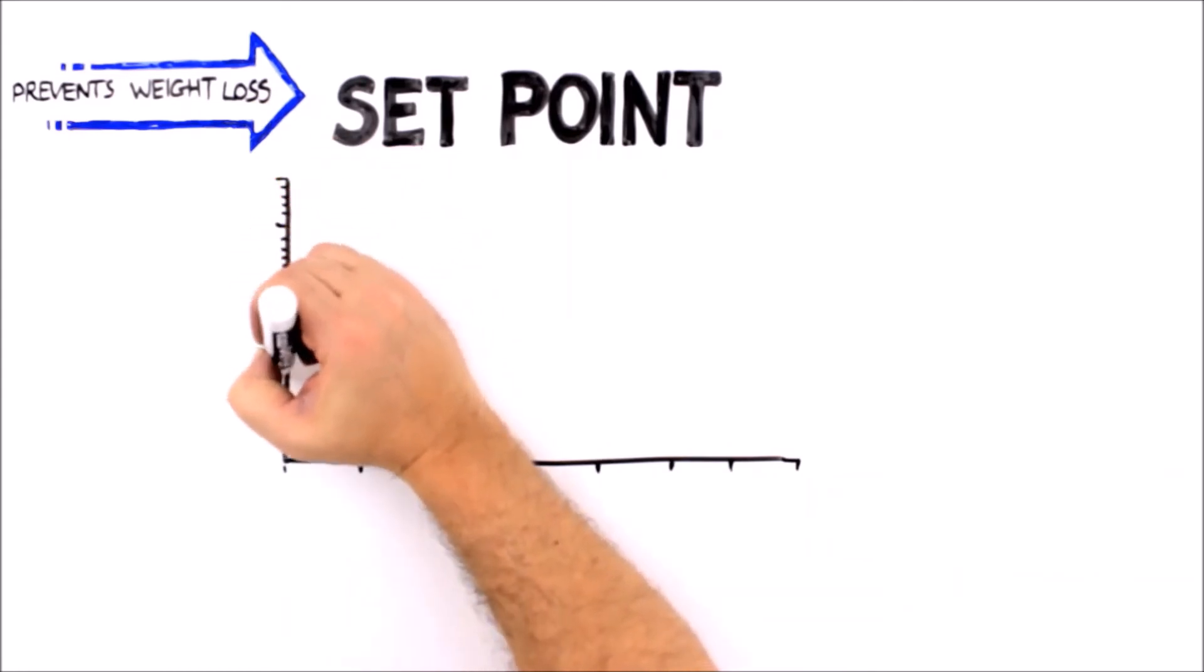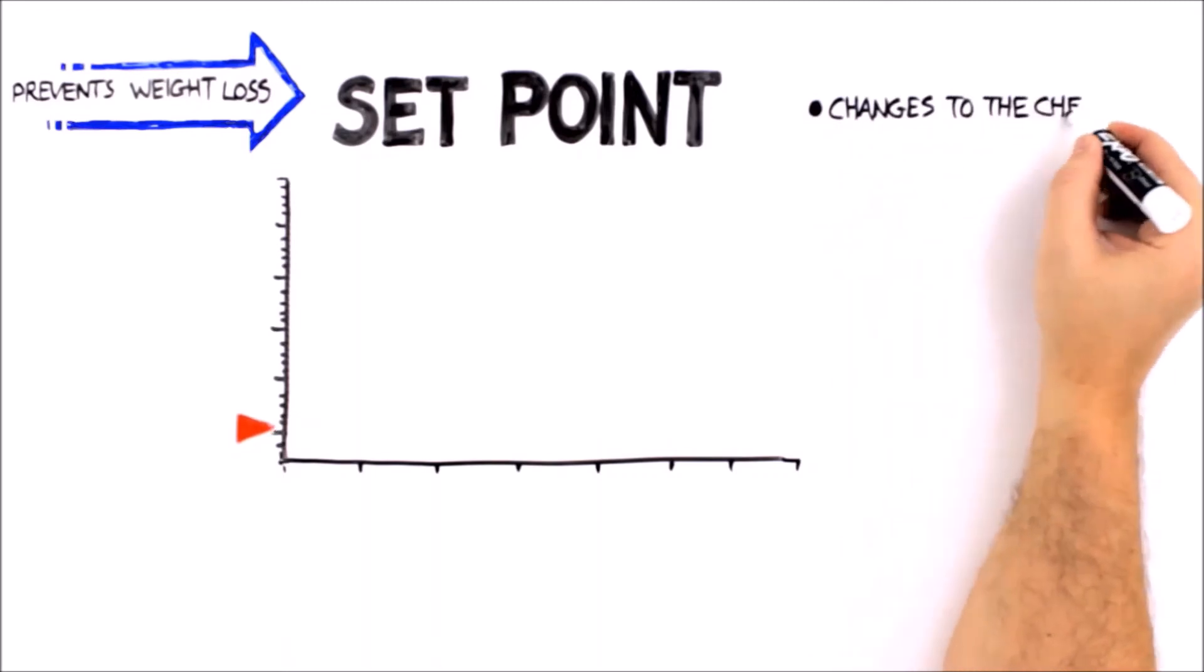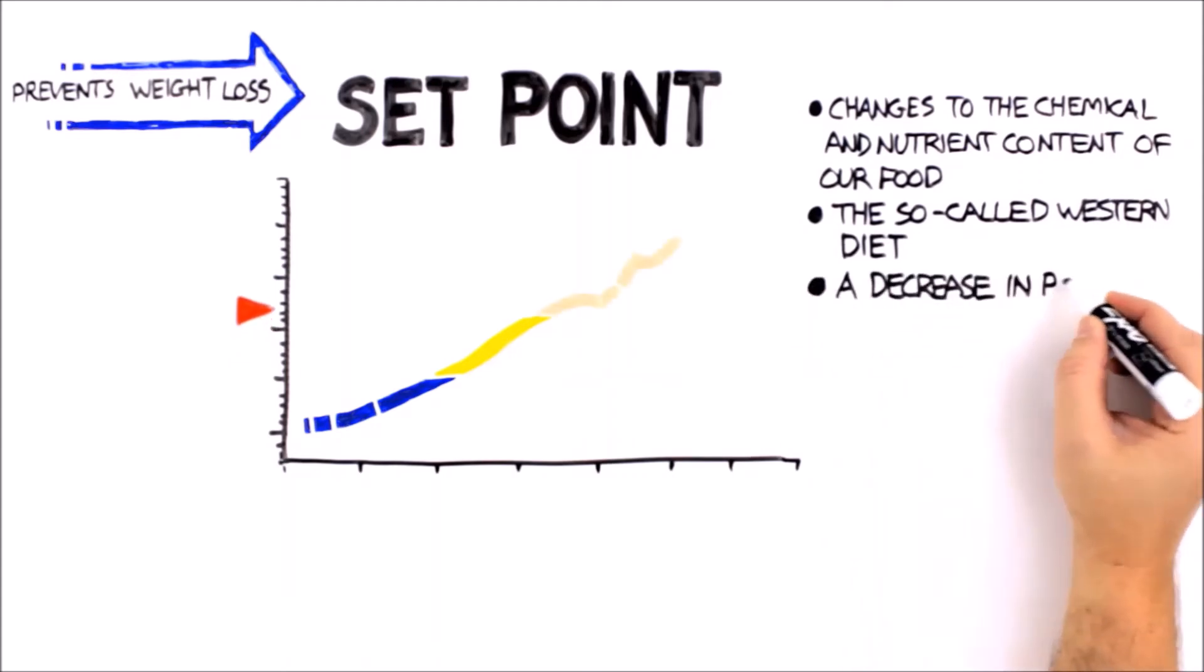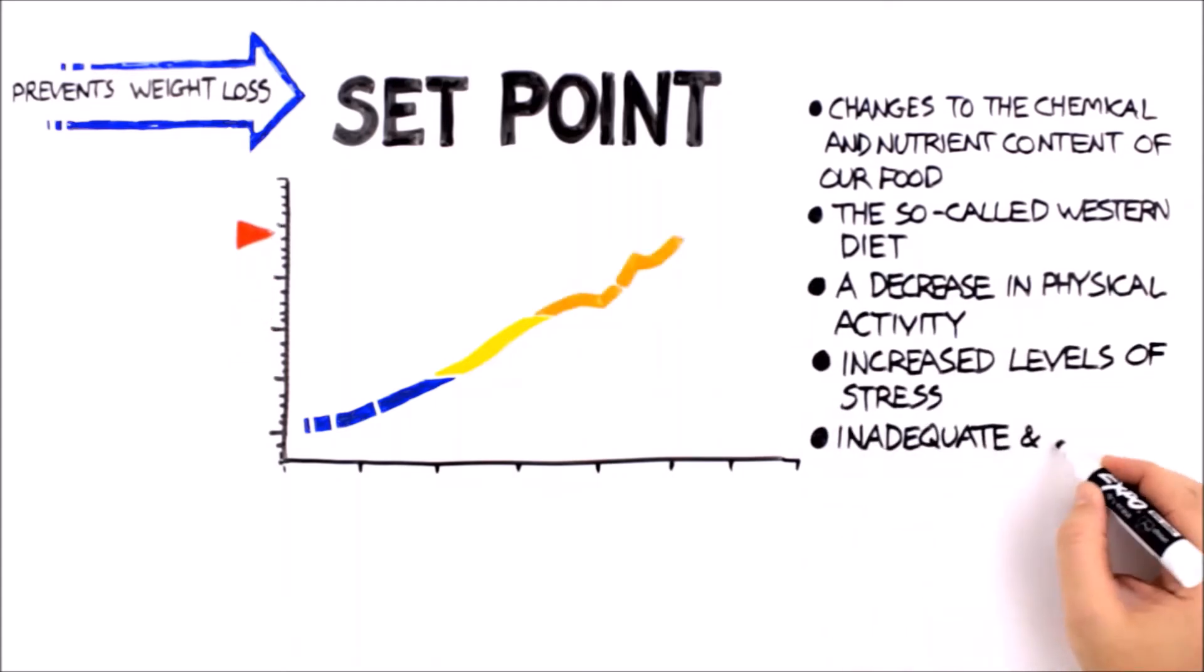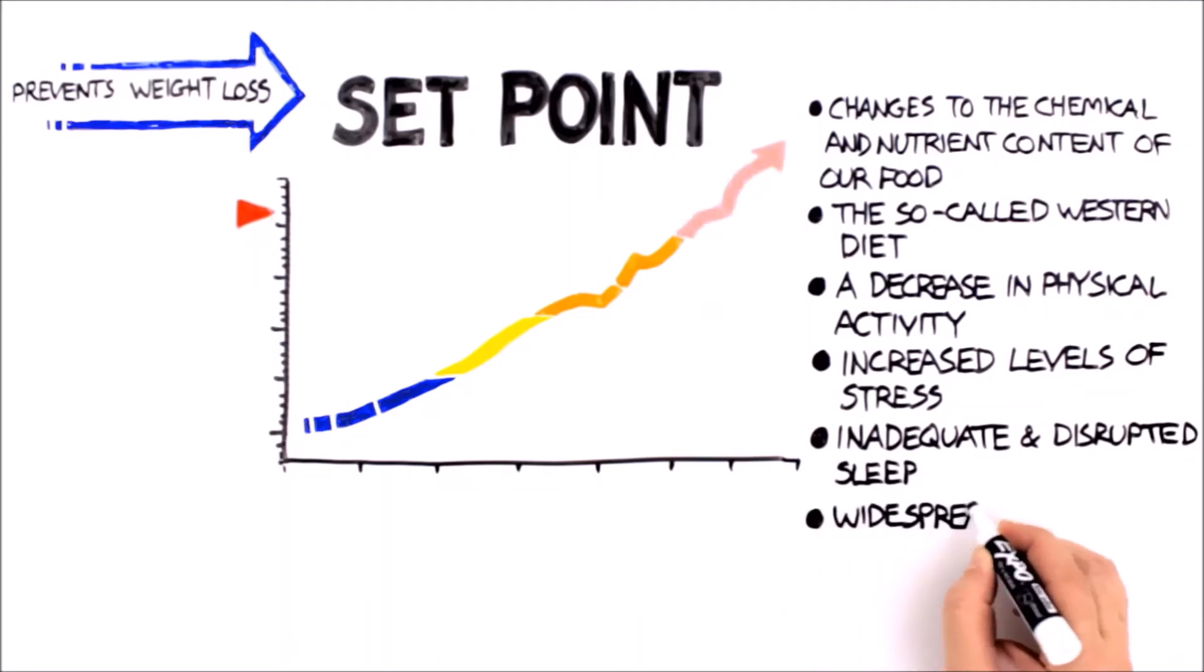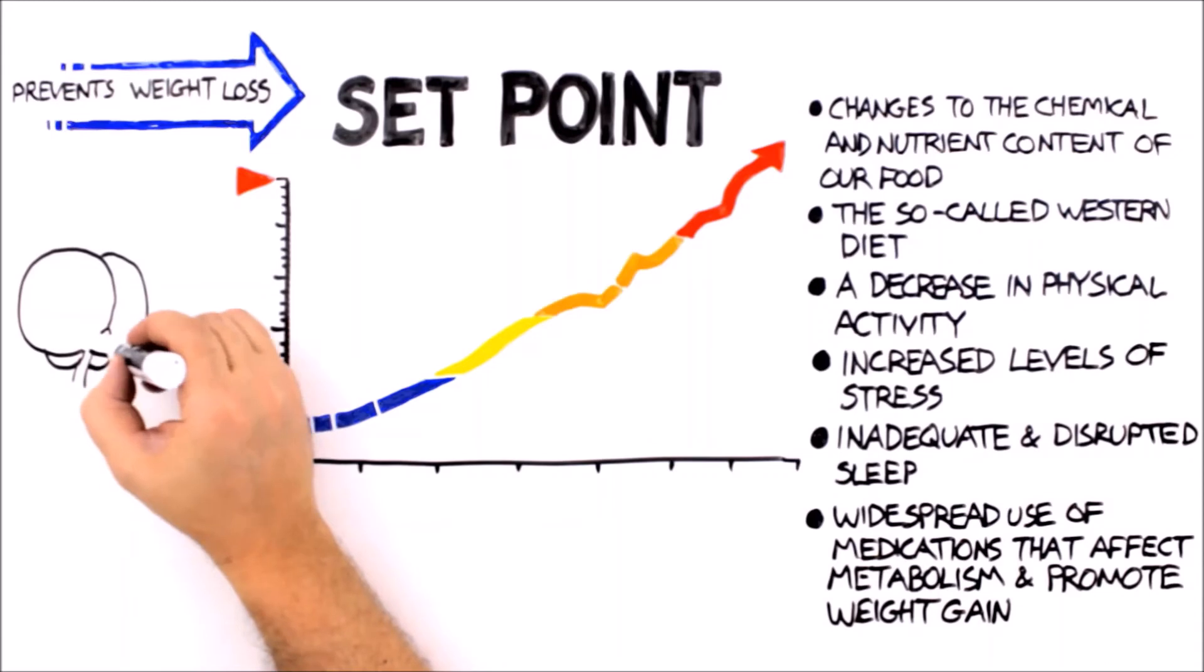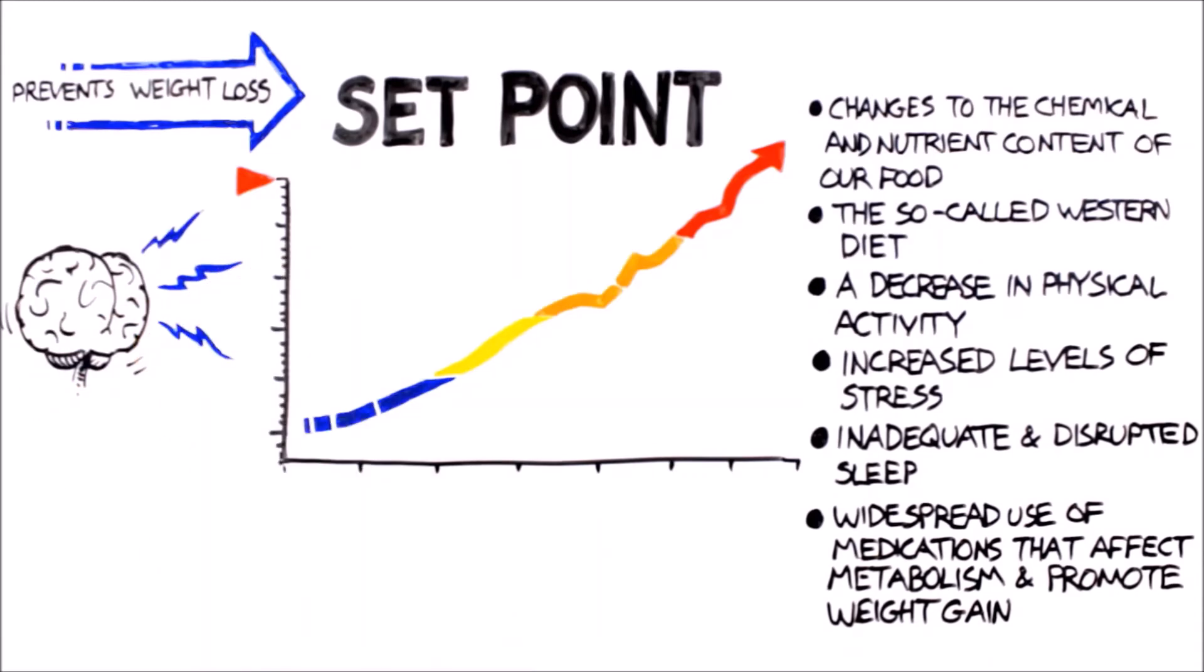It actually takes a perfect storm to cause an obesity epidemic. Changes to the chemical and nutrient content of our food, the so-called Western diet, a decrease in physical activity, increased levels of stress, inadequate and disrupted sleep, and more widespread use of medications that affect metabolism and promote weight gain, all appear to play a role in elevated set points and rising rates of obesity. And Amanda responded to those environmental changes by sending hormonal signals that elevate her set point for body fat.